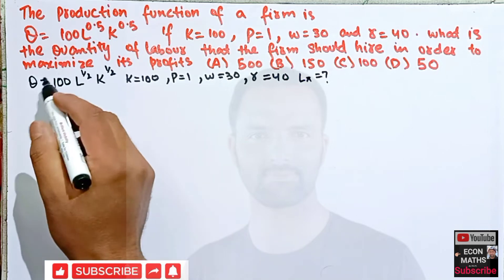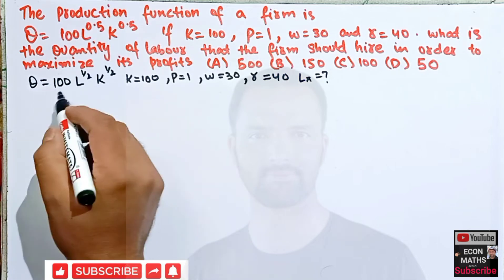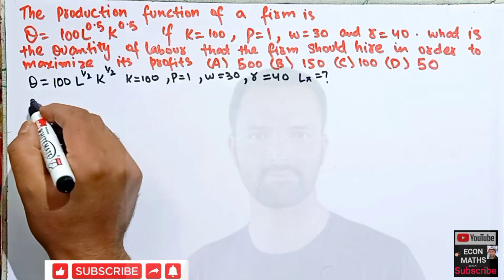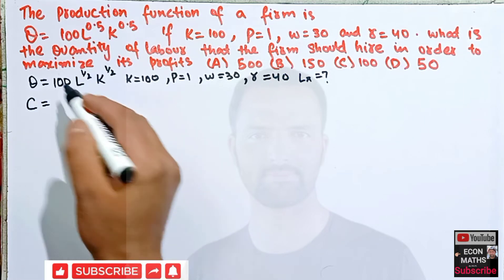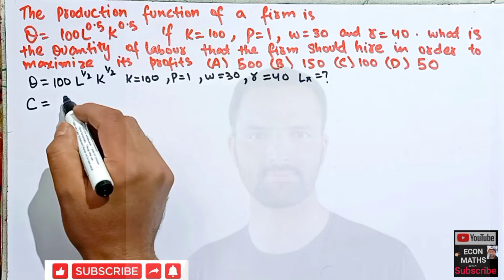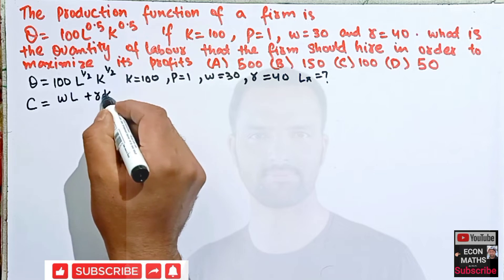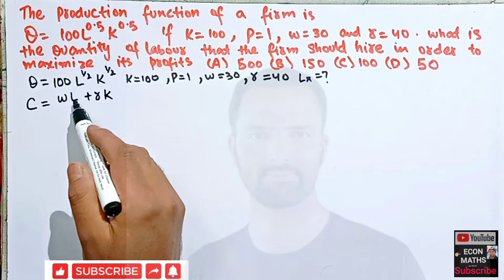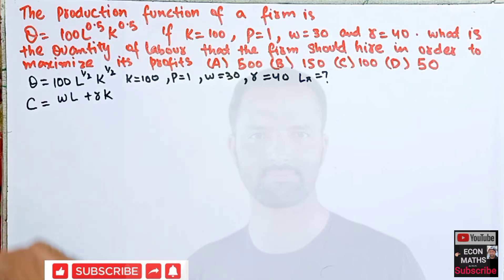We have the production function and we need to set up our cost constraint. Cost is given by C = WL + RK, that is wage rate into number of laborers plus rental rate of capital into number of units of capital. This is our cost constraint.